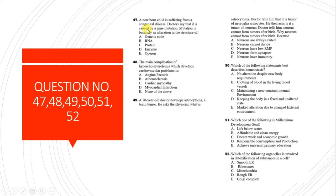Question 47: A newborn baby suffering from a congenital disease caused by a gene mutation. Mutation is basically an alteration in the structure of the genetic code, leading to alteration in the sequence of the polypeptide chain.